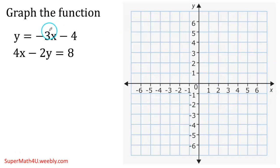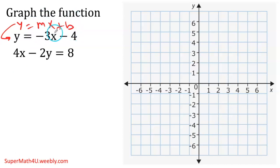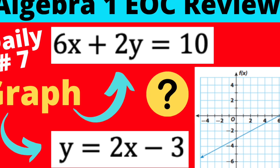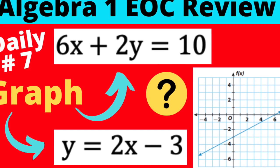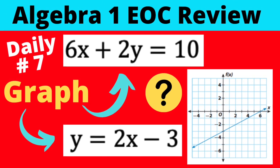Most likely they're going to ask you to estimate the answer. As you can see, we have two equations — that's why it's called a system. The first one is written in slope-intercept form, y = mx + b, where the slope is negative 3 and the y-intercept is negative 4. If you have questions about graphing, please go to the previous video.